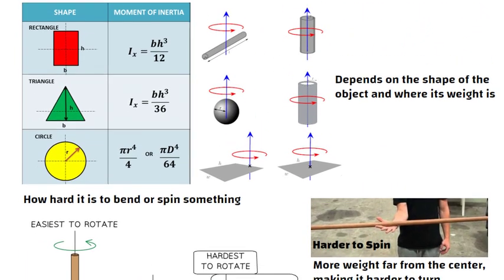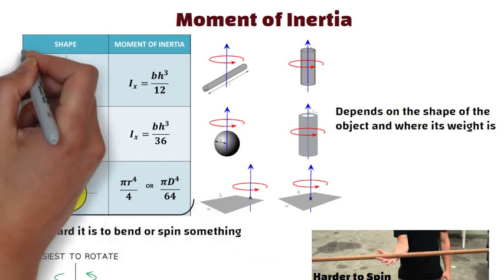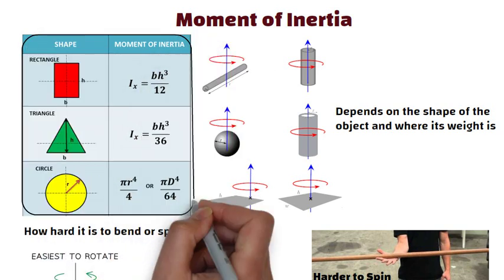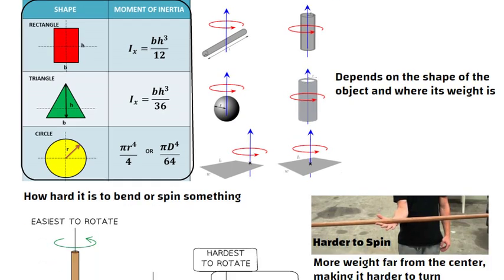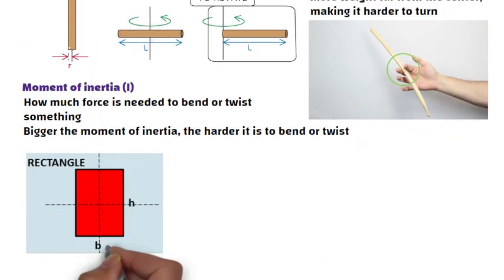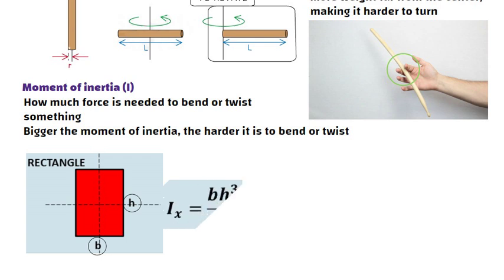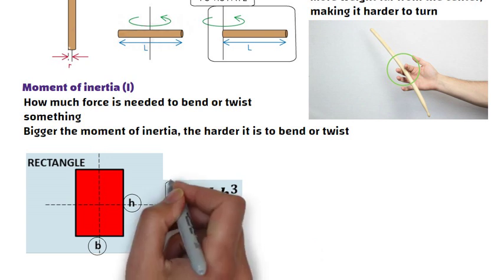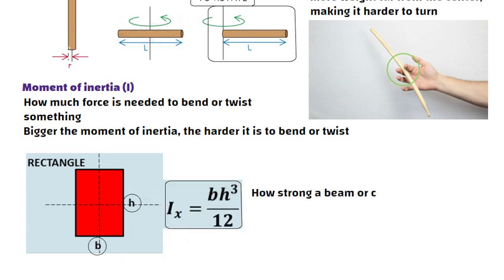Different shapes like rectangles or circles have different ways to calculate their moment of inertia. For example, for a rectangle with width B and height H, we can find its moment of inertia with a special formula: I is equal to B into H cube divided by 12.